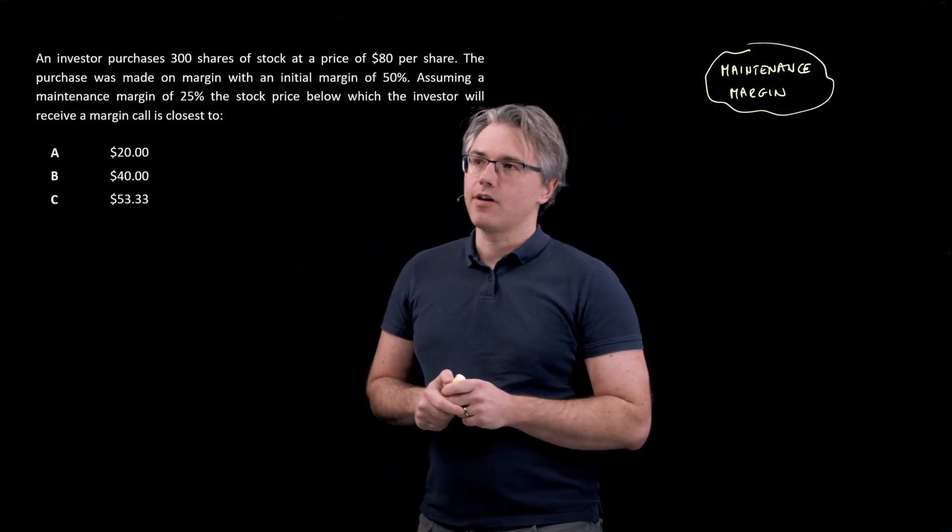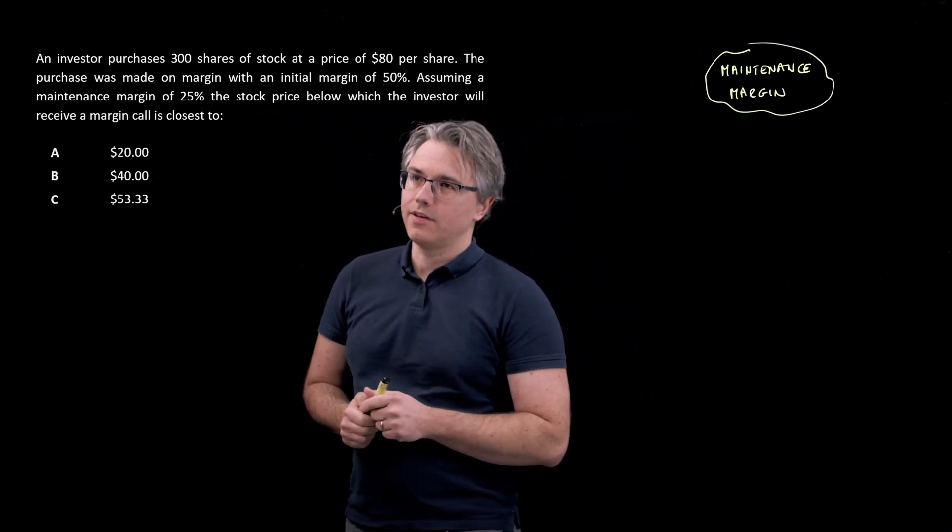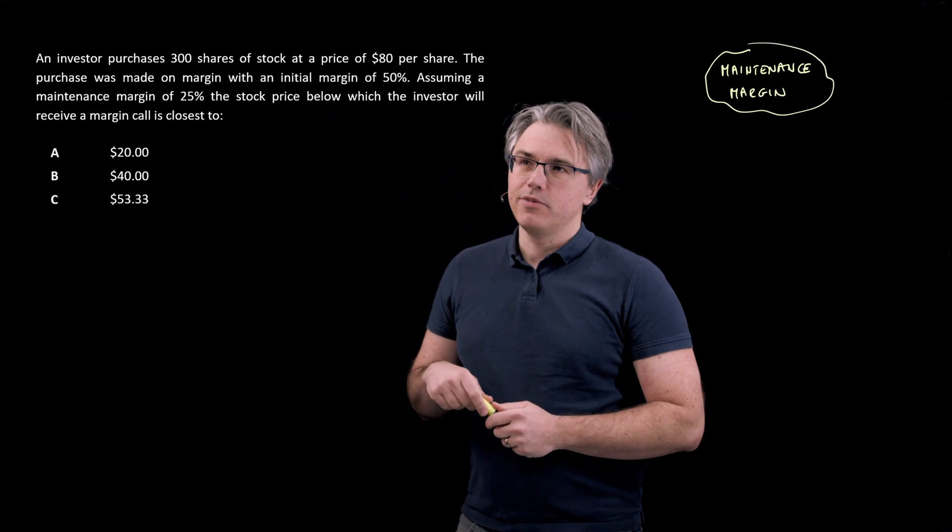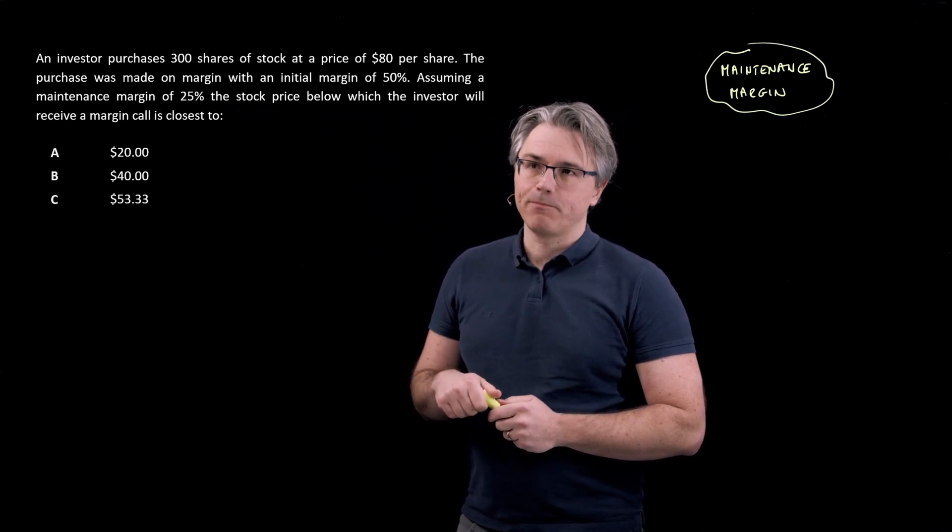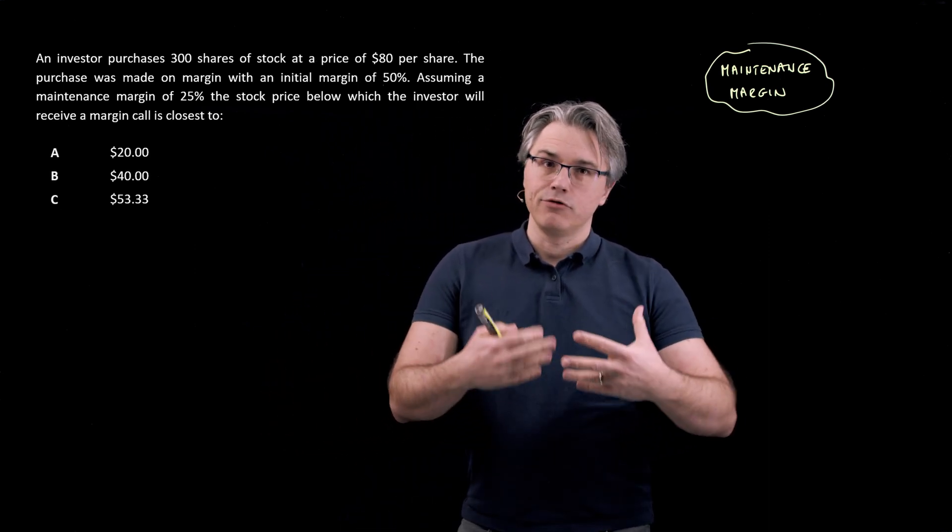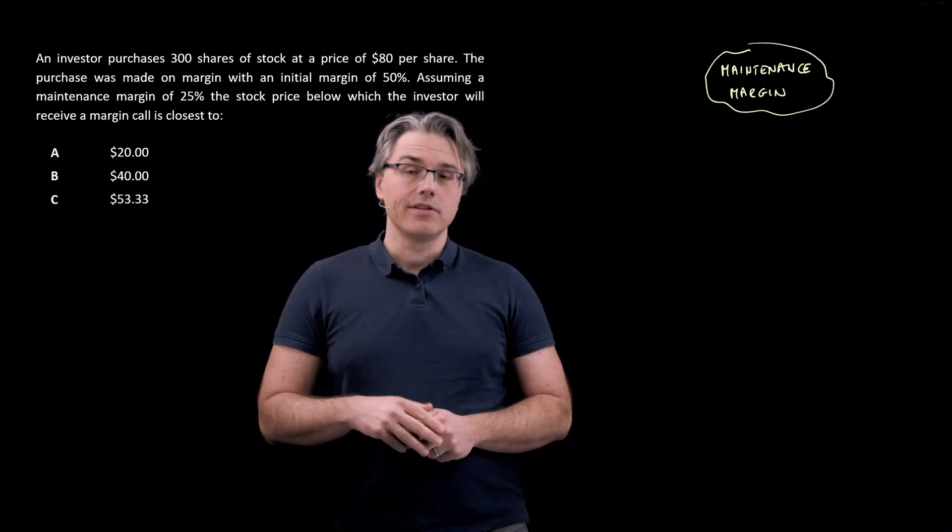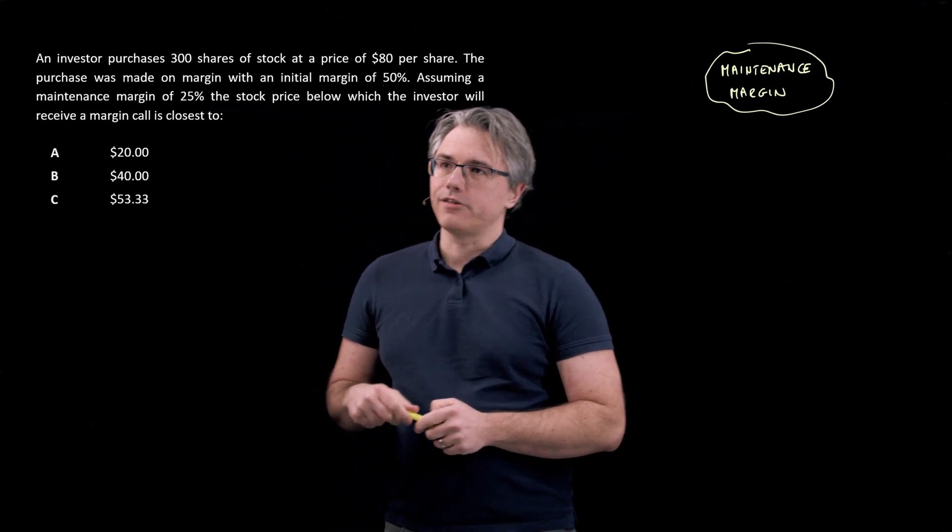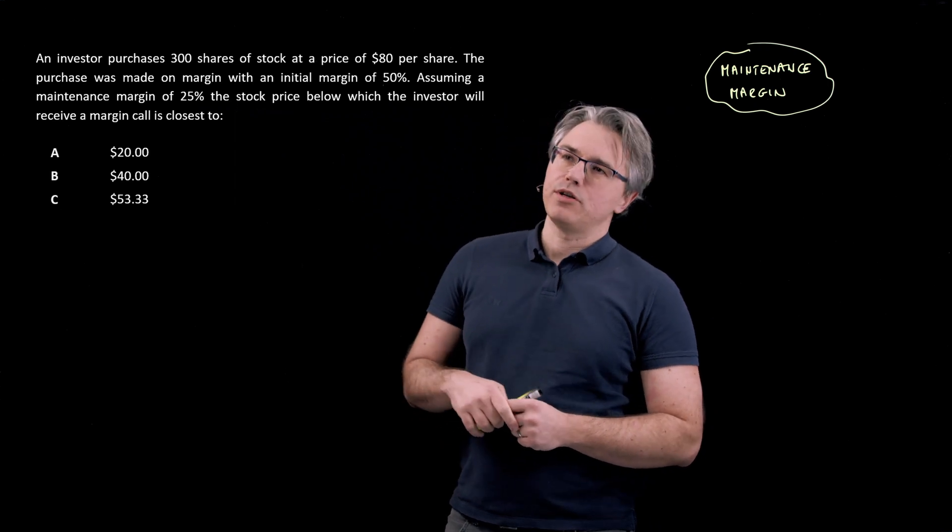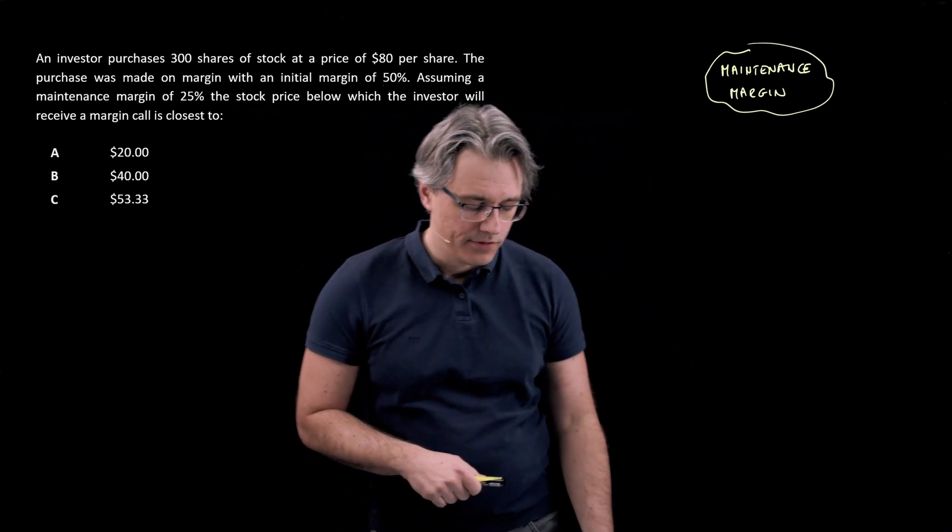So this is the question that I want us to go through. An investor purchases 300 shares of stock at a price of $80 per share. The purchase was made on margin, that is with borrowed money, with an initial margin of 50%. Now the initial margin of 50% means that the investor contributed 50% of the purchase price of those 300 shares. The rest was lent to them by the financial institution, by the broker. Assuming a maintenance margin of 25%, the stock price below which the investor will receive a margin call is closest to, and we've got three potential choices here.